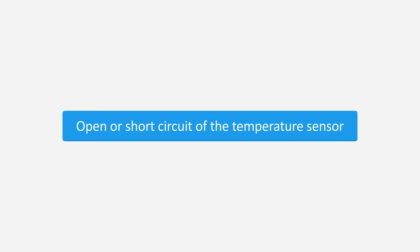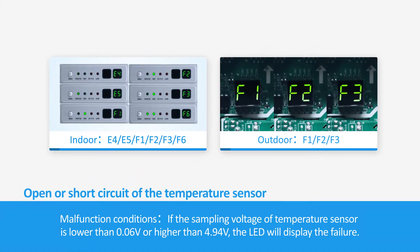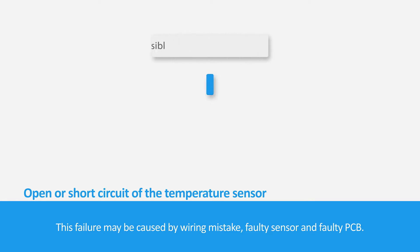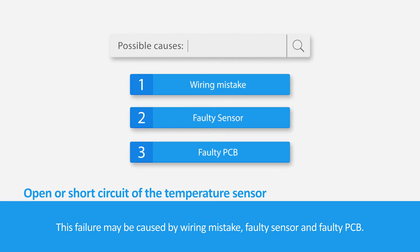Open or short circuits of the temperature sensor are malfunction conditions. If the sampling voltage of the temperature sensor is lower than 0.06 volts or higher than 4.94 volts, the LED will display a failure. The failure may be caused by a wiring mistake, a faulty sensor, or a faulty PCB.